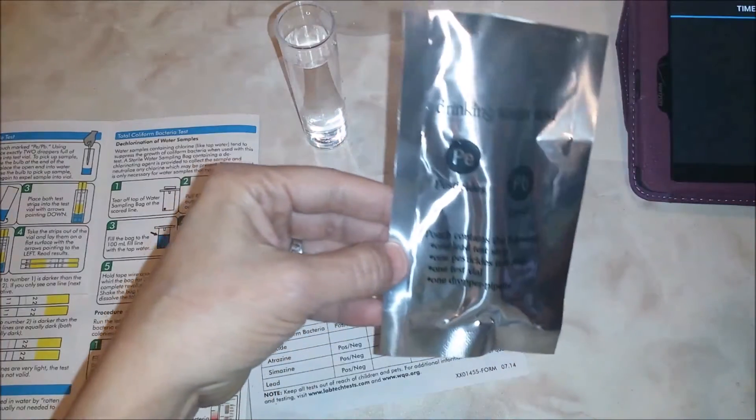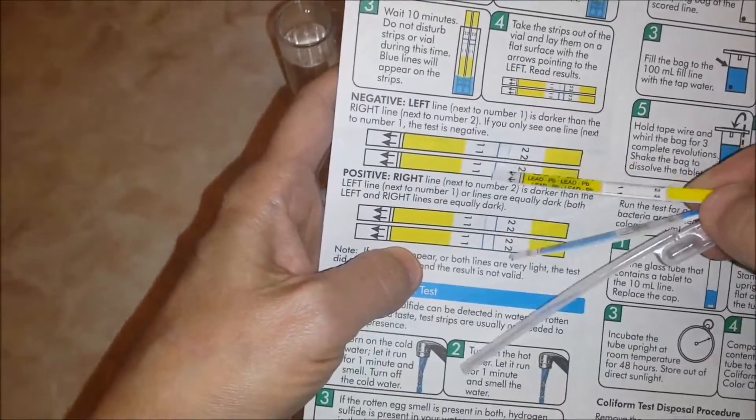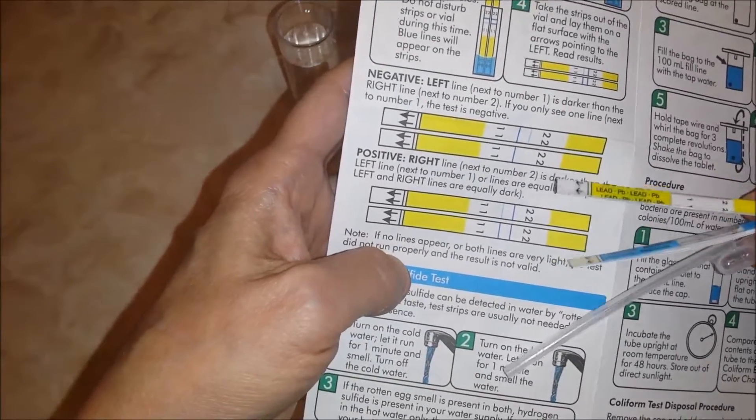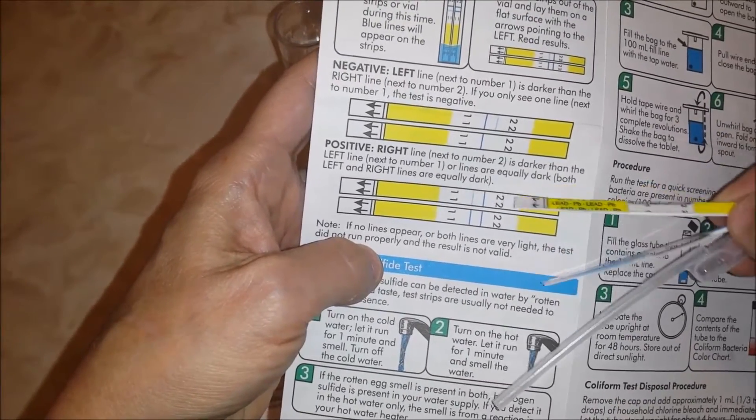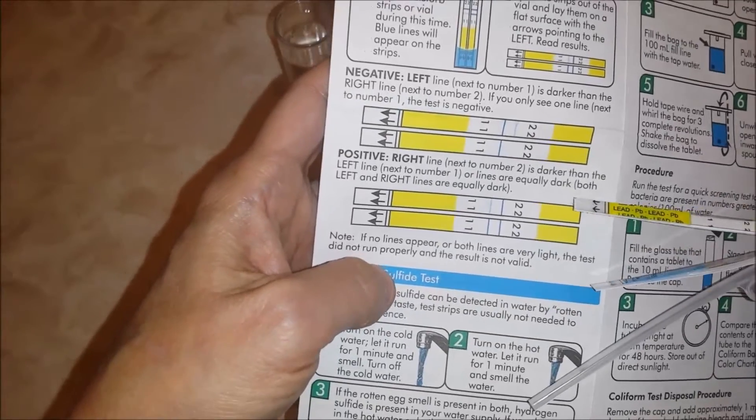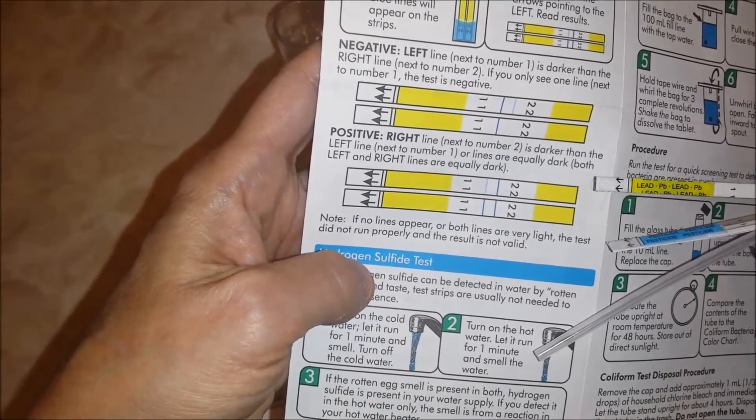The next test is for pesticides and lead. I've opened the package. It has this pretty strange little dropper. You squeeze it to pick up water. It has this little test vial and two strips. The yellow is lead, the blue is pesticide. See how they have a 1 and 2 on them? Take a look at the readings. If the line toward the 1 is darker than the 2, it's negative. If the line toward the 2 is darker than the line toward the 1, it's positive. Or if the numbers are equally dark, it's positive. If no lines appear or both lines are very light, the test did not run properly.